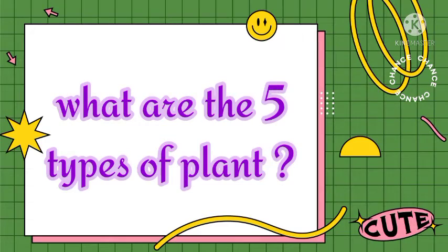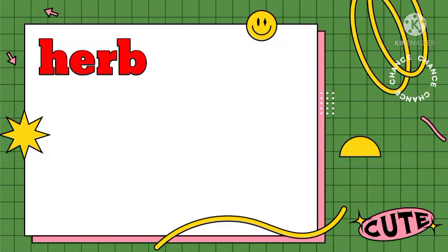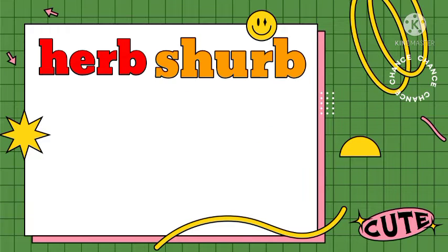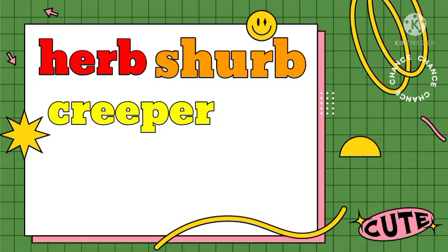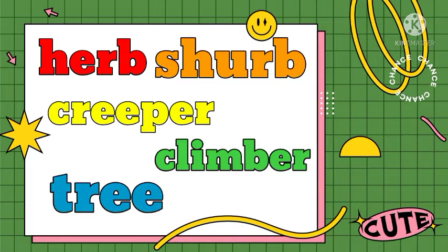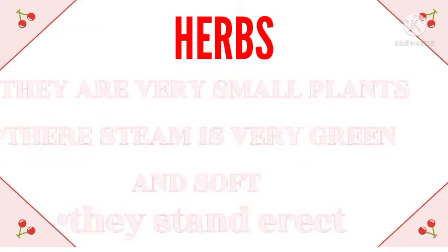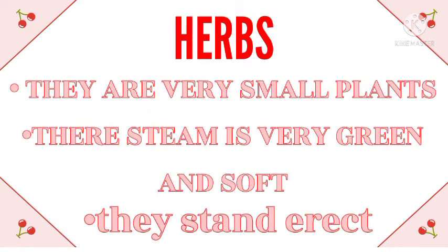How many types of plants are there? There are five types of plants. What are the five types of plants? Herb, shrub, creeper, climber, and trees are the five types of plants.